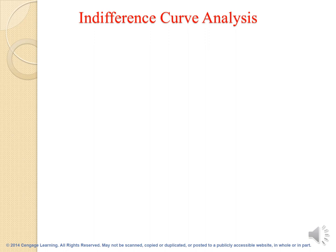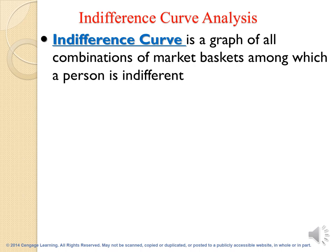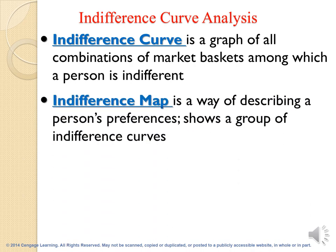When we have many market baskets with the same utility or the same satisfaction, we put them in an indifference curve. An indifference curve is a graph of all the combinations of market baskets among which the person is indifferent — it is indifferent for the person to get any point or any market basket from the same indifference curve, as all of them give the consumer the same satisfaction. When we put all our indifference curves in the same graph, it is called an indifference map, which shows a group of indifference curves and describes the person's preferences.